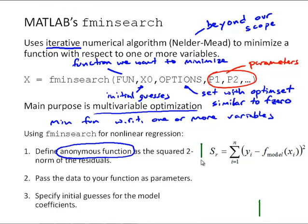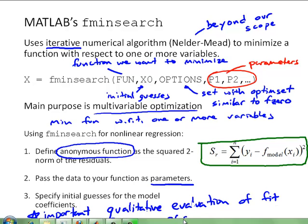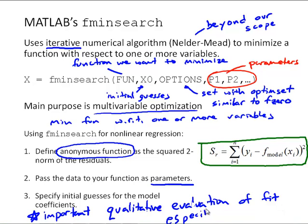How can we use this for nonlinear regression? We define the function that we send to fminsearch using an anonymous function defined as the squared 2-norm of the residuals, the sum of the squares of the residuals. Then we pass the data through fminsearch to our function as parameters and specify initial guesses for the model coefficients. This is an important step because fminsearch may converge on some local minimum that's not necessarily the best fit, so qualitative evaluation of the curve fit is especially important.